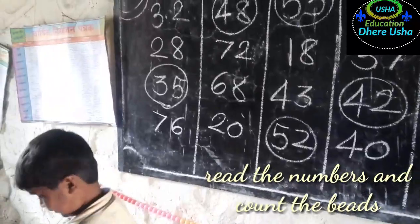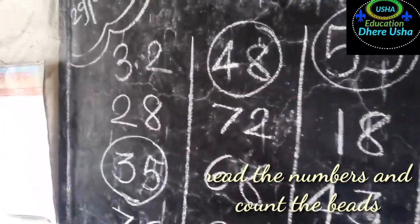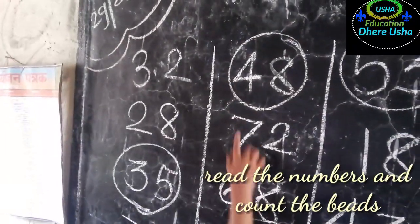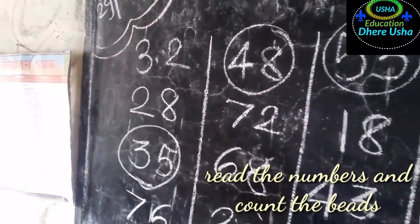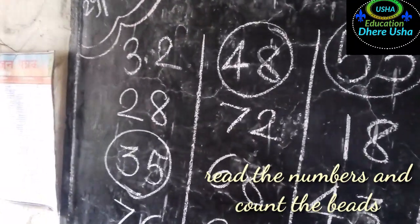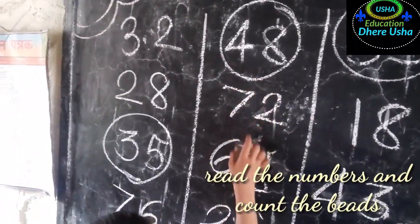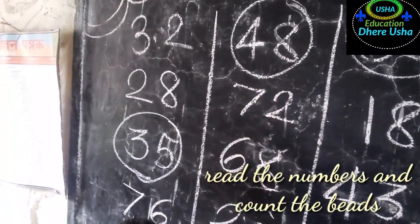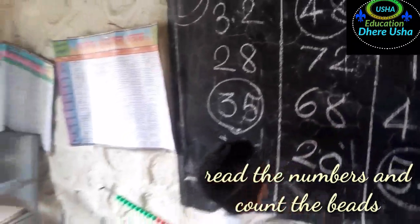Others, stand up. Read this number. Forty-eight. Very good. How many units? Eight. How many tens? Four. Count the beads.